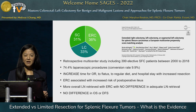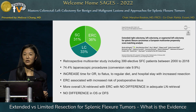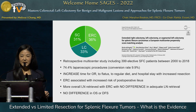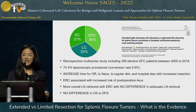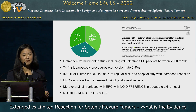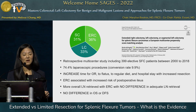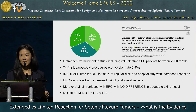A multicenter retrospective European study including nearly 400 patients undergoing elective splenic flexure colon cancer surgery between 2000 and 2018 found an approximately equal split among the three procedure types, with the most common being extended right colectomy. Nearly 75% of cases were approached minimally invasively with a conversion rate below 10%. There was increased operative time, time to flatus, time to regular diet, and hospital stay with increased resection. Extended right colectomy was associated with increased postoperative ileus even in elective cases, more lymph nodes harvested but no difference in adequate retrieval, and no difference in overall or disease-free survival.